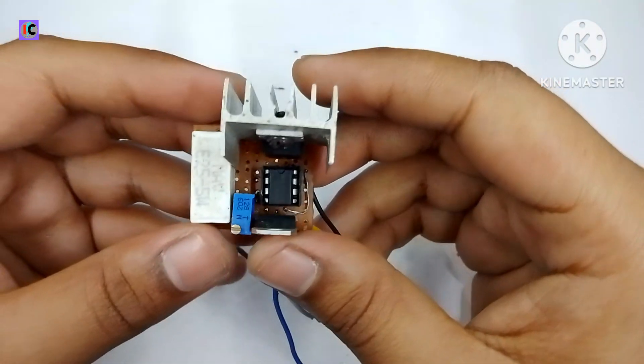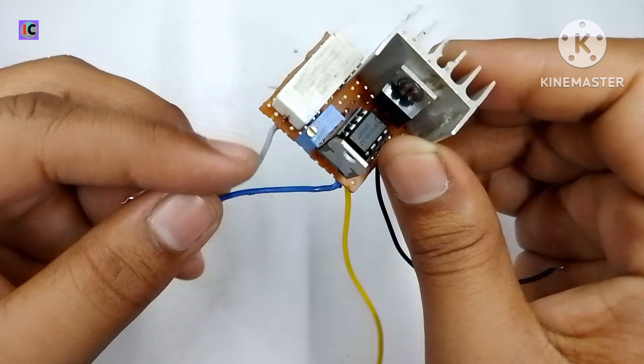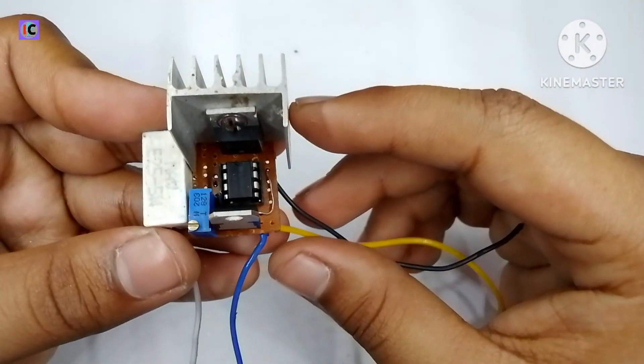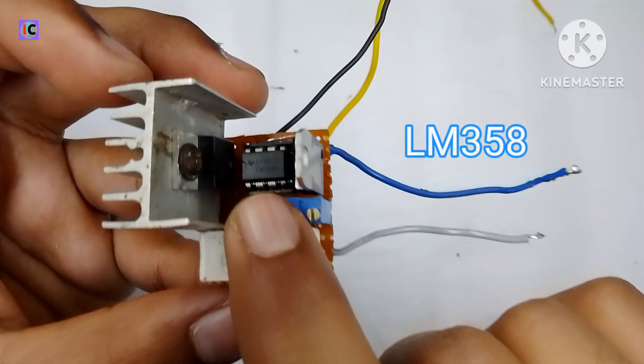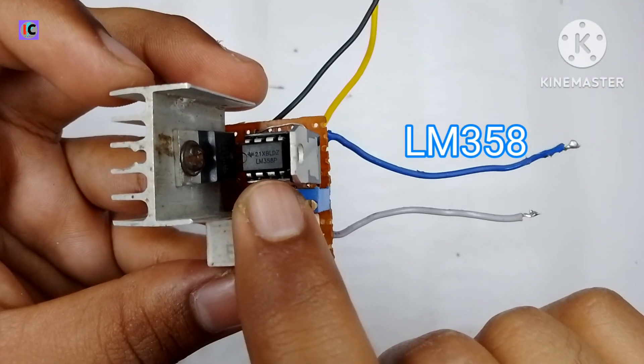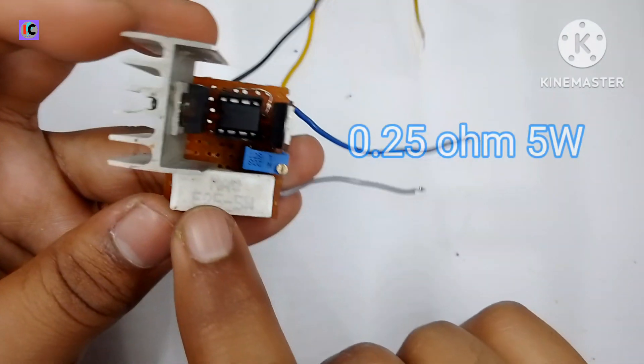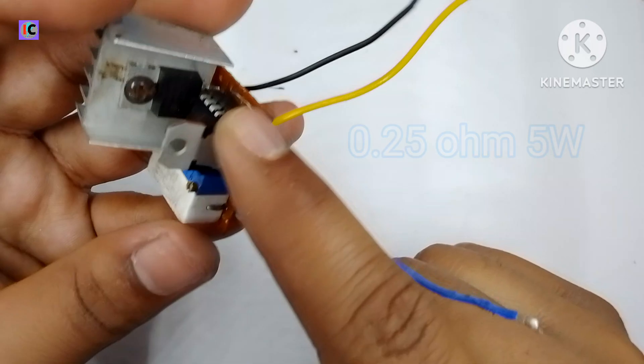Hello guys, welcome back to my channel. In this video we are going to see this unique circuit that controls the current of any power supply and batteries for driving LEDs and sensitive circuits. This is basically based on LM358 and for current sensing here I'm using a 0.25 ohm 5 watt resistor.